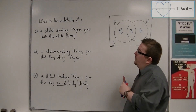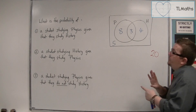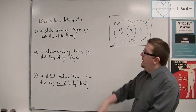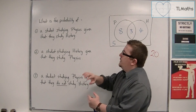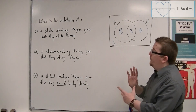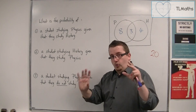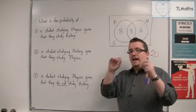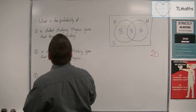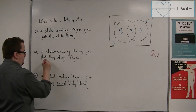Reading these three questions to start off with: what is the probability of a student studying physics given that they study history; a student studying history given that they study physics; and a student studying physics given that they do not study history? All three have commonality in the sense that all three have this 'given that' part to the question.